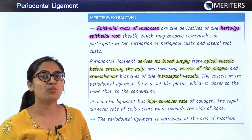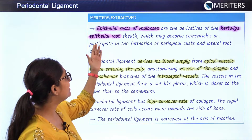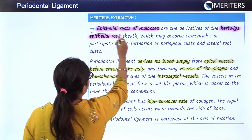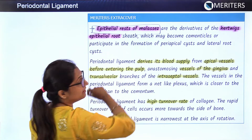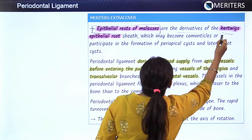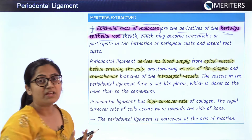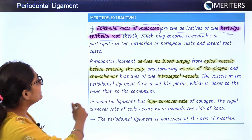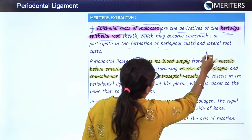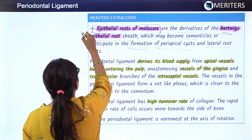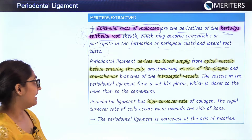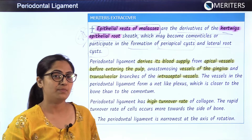Another key point is the epithelial rests of Malassez, which is very important tissue because many MCQs are based on it. These are derivatives of the Hertwig's epithelial root sheath, which may become cementocles or participate in the formation of periapical cysts and lateral root cysts.